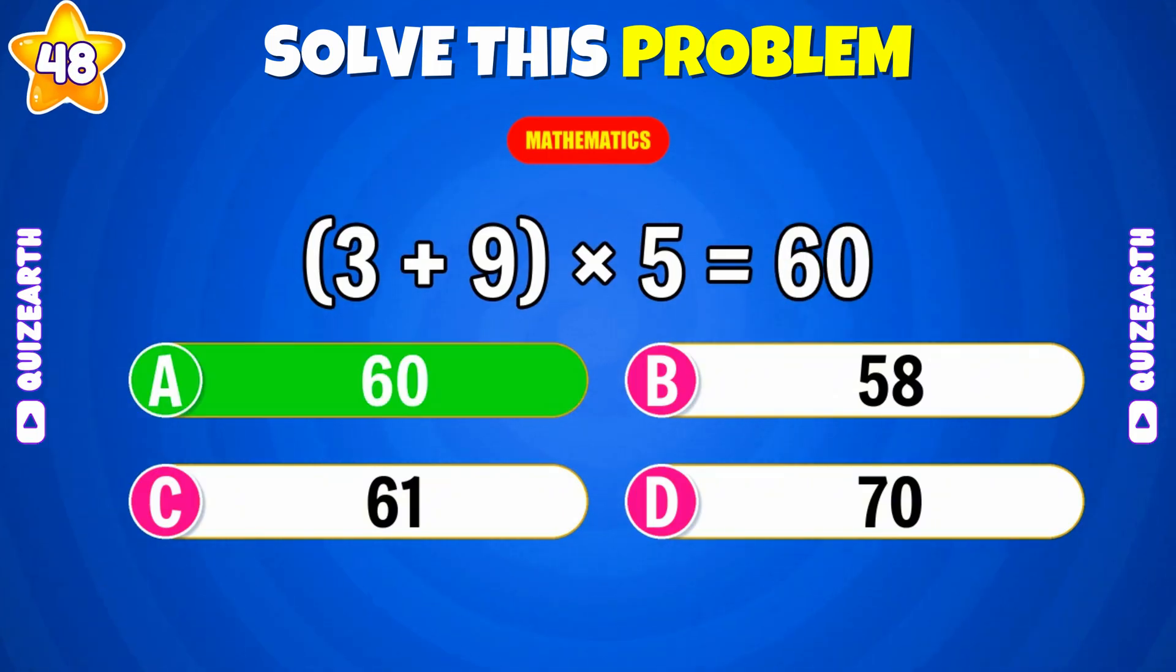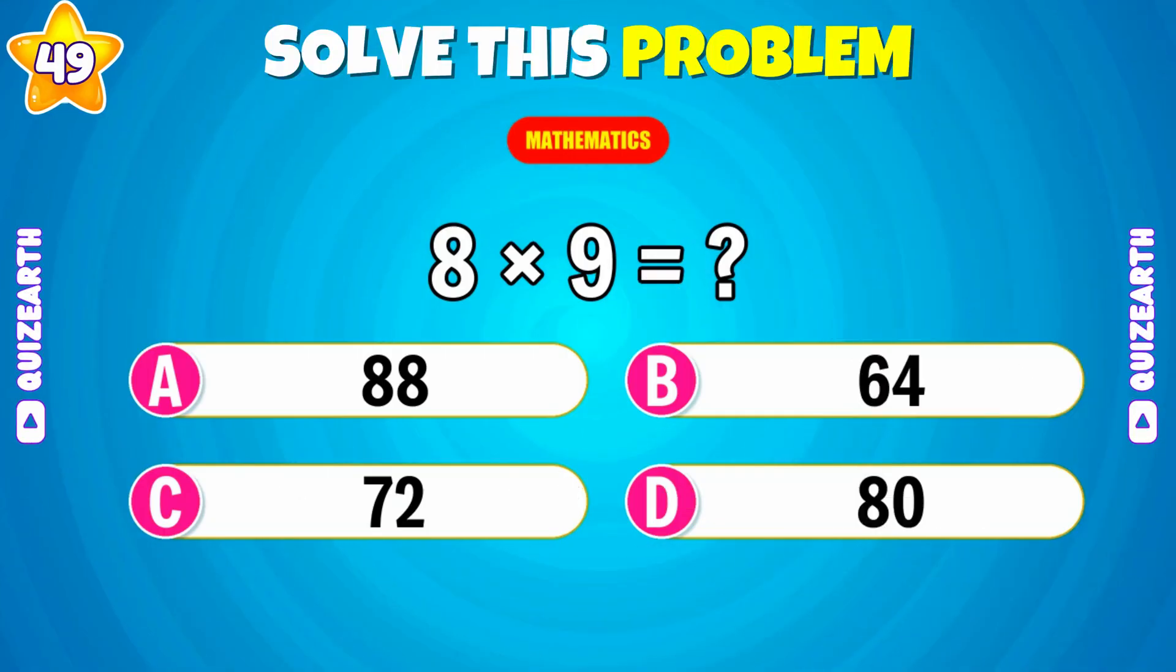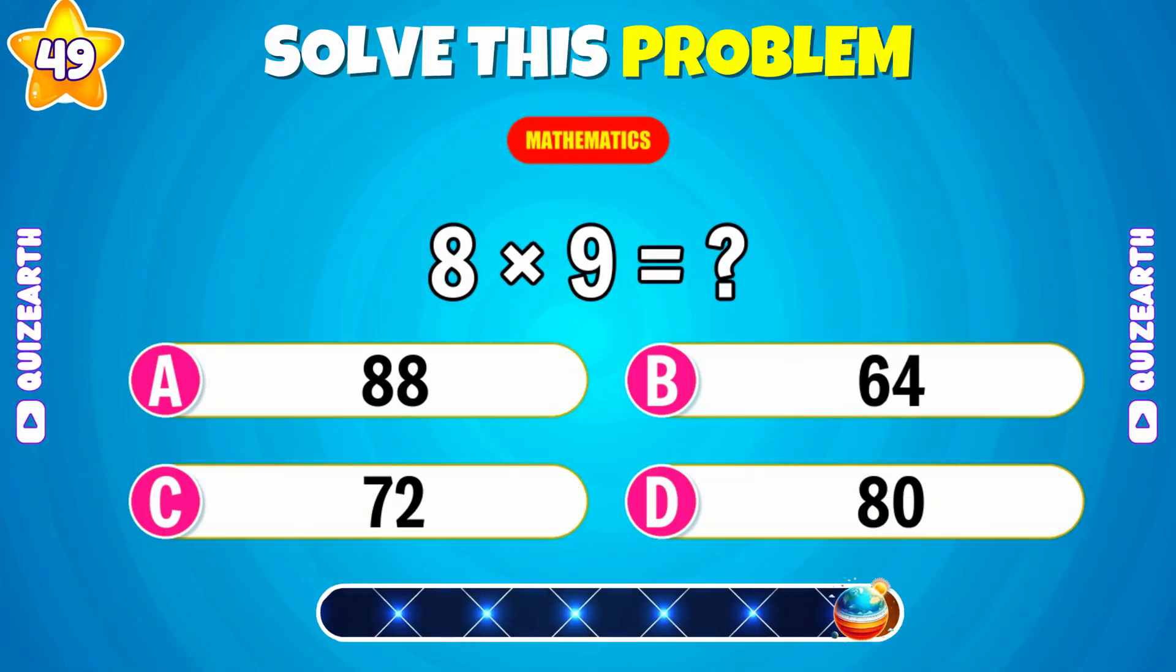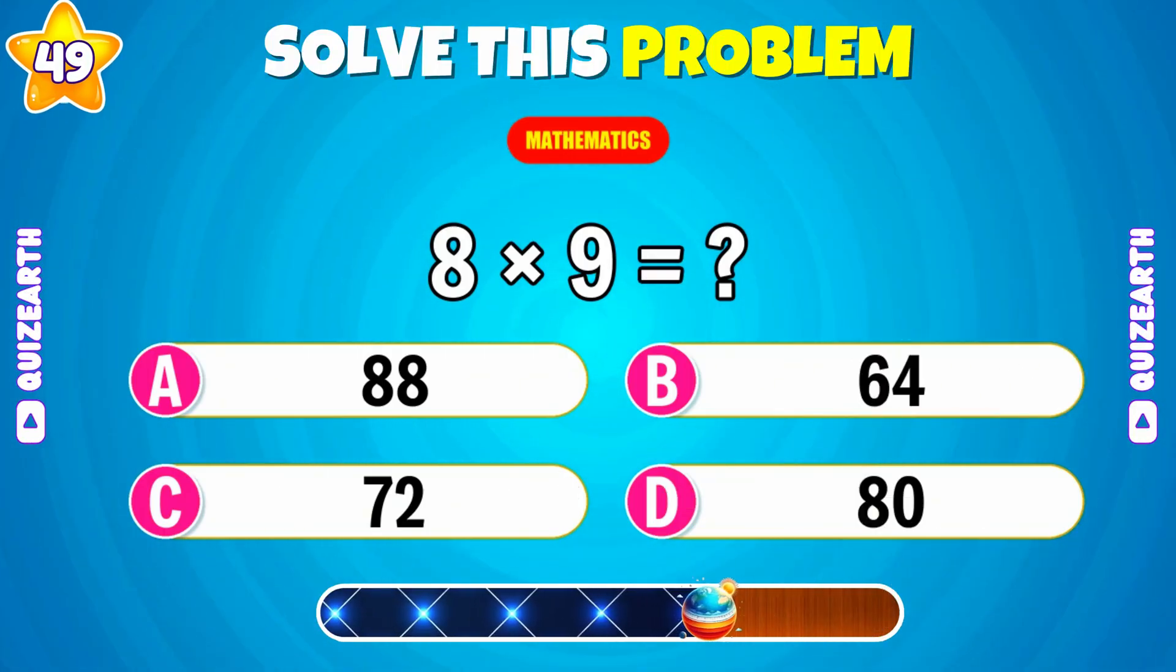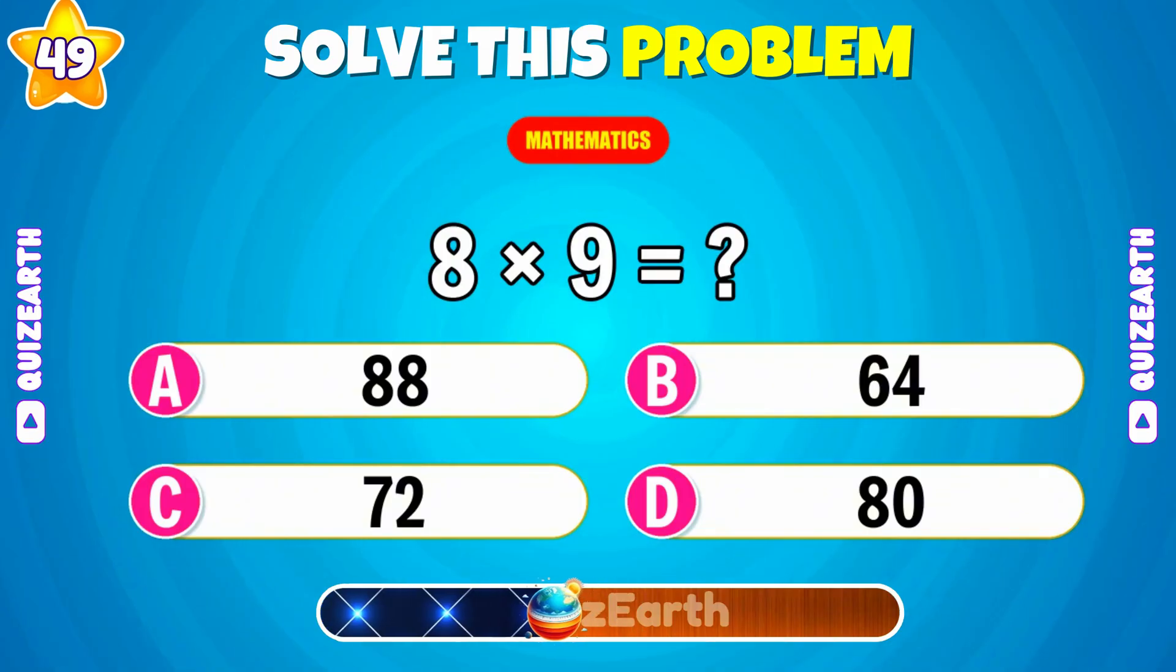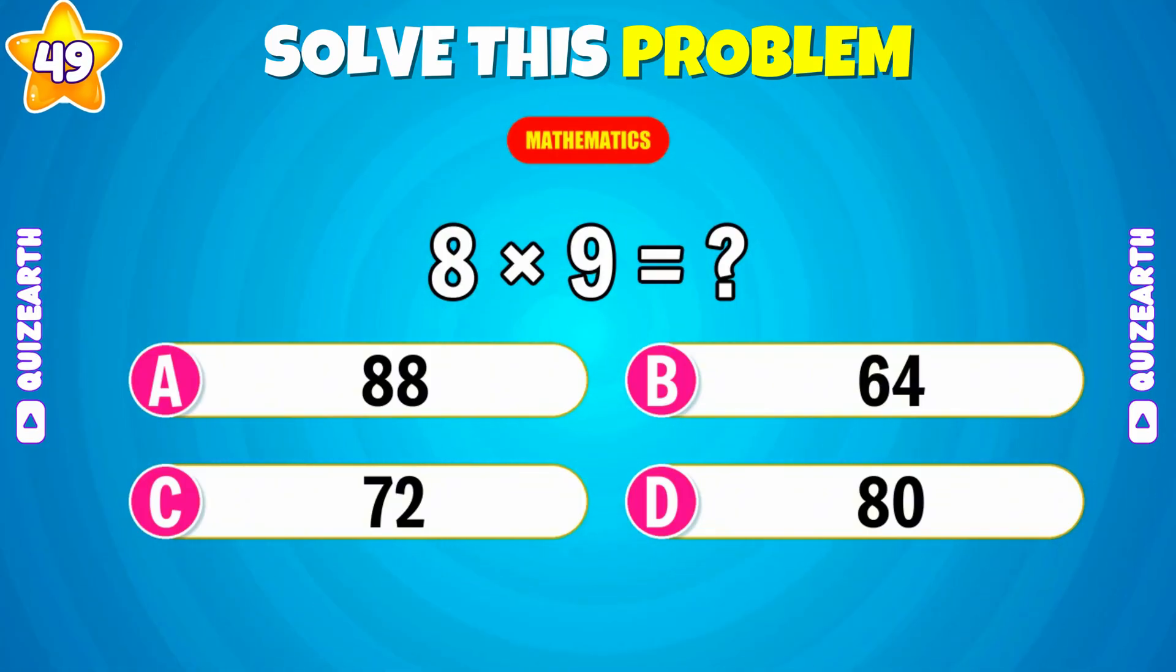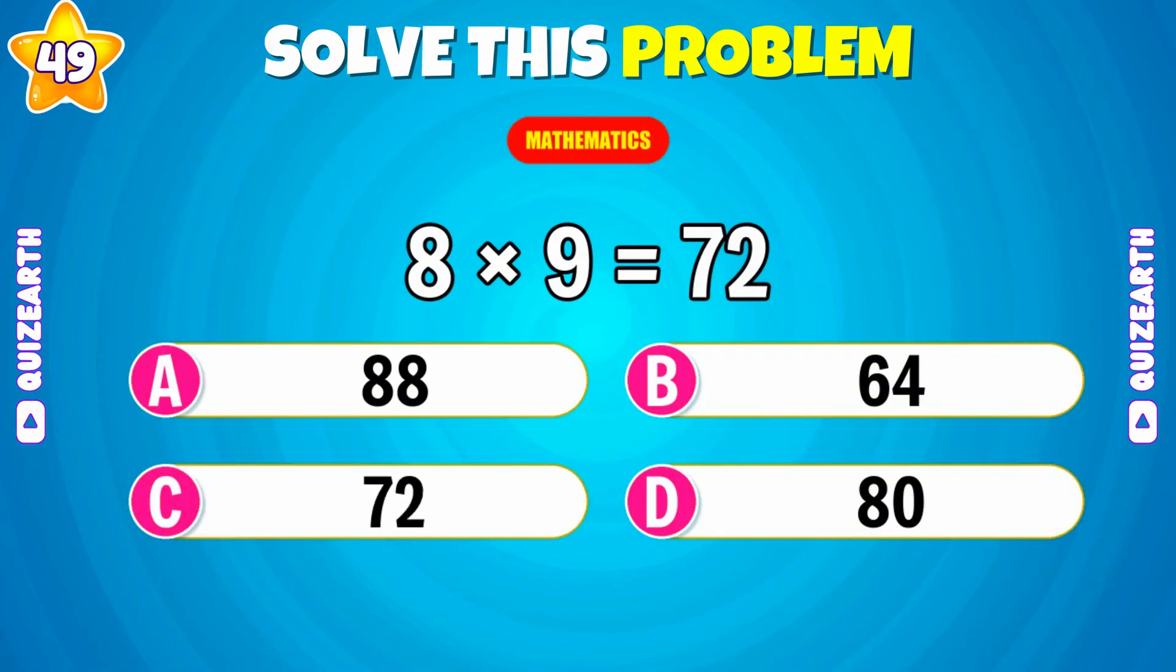Now. 3 plus 9 times 5. Brilliant. 60. 8 times 9. Outstanding. The answer is 72.